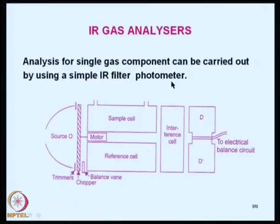In the last class, we discussed about the infrared gas analyzers, and these are essentially infrared filter photometers. That means no monochromator is required for the analysis of process gases. The infrared radiation is split into two beams and then directed towards bolometers wired in a balance circuit.